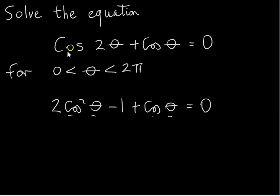I could have used a different identity for cos 2θ — there's an identity involving sin²θ — but that wouldn't be such a good idea here because then we'd have a sine function and a cosine function, two different functions. We try to keep the functions the same as well if possible.